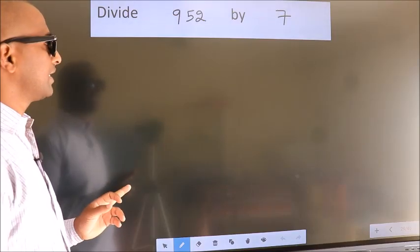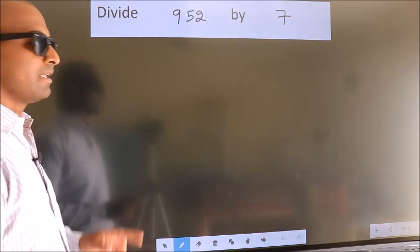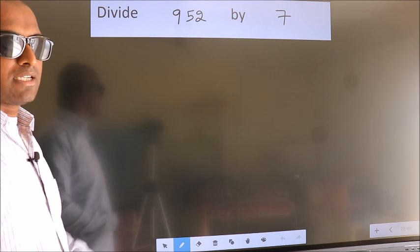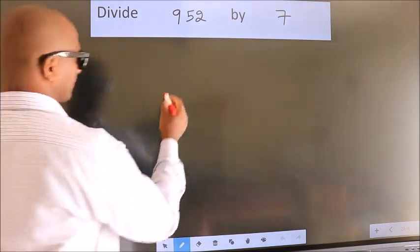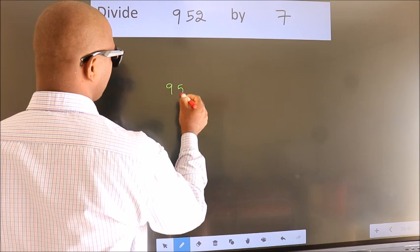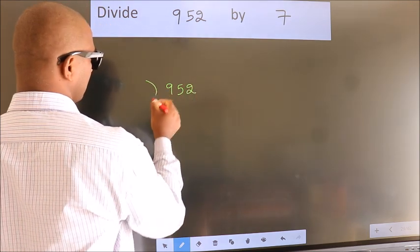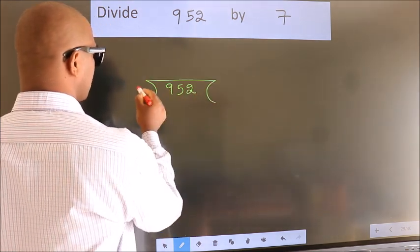Divide 952 by 7. To do this division we should frame it in this way. 952 here, 7 here.